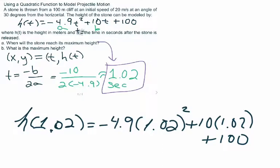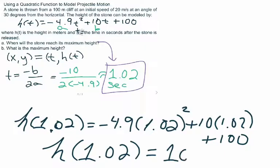Working this out, we would calculate that h of 1.02 equals 105.1 meters.